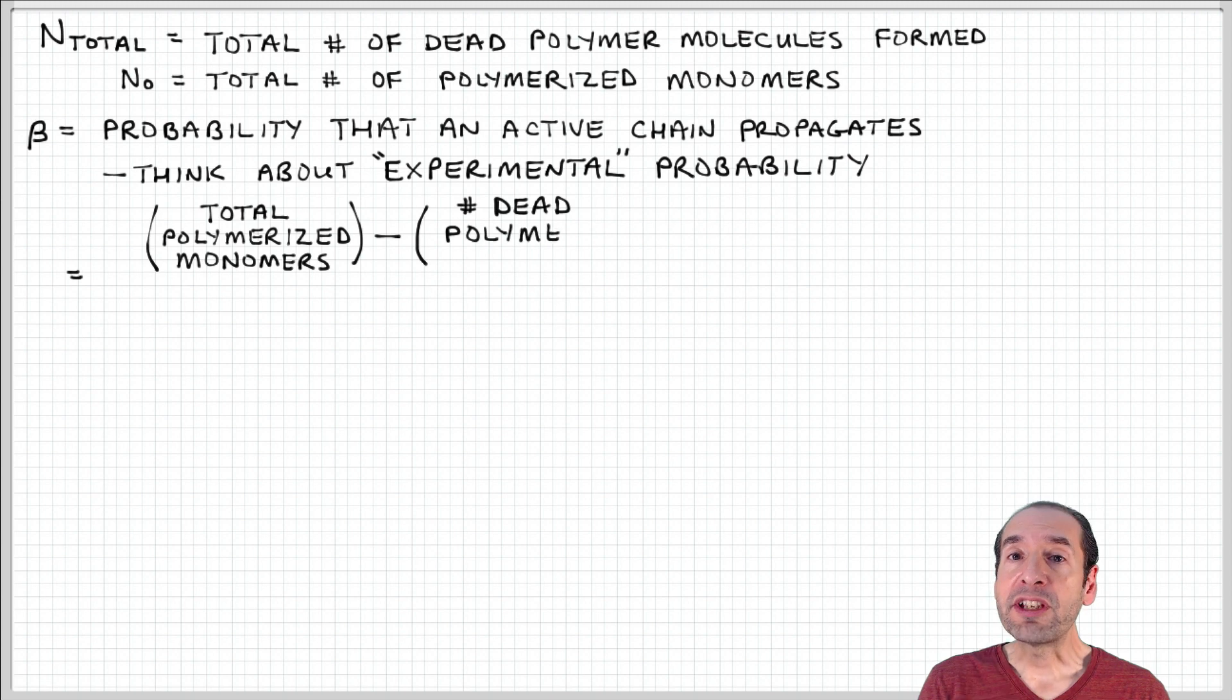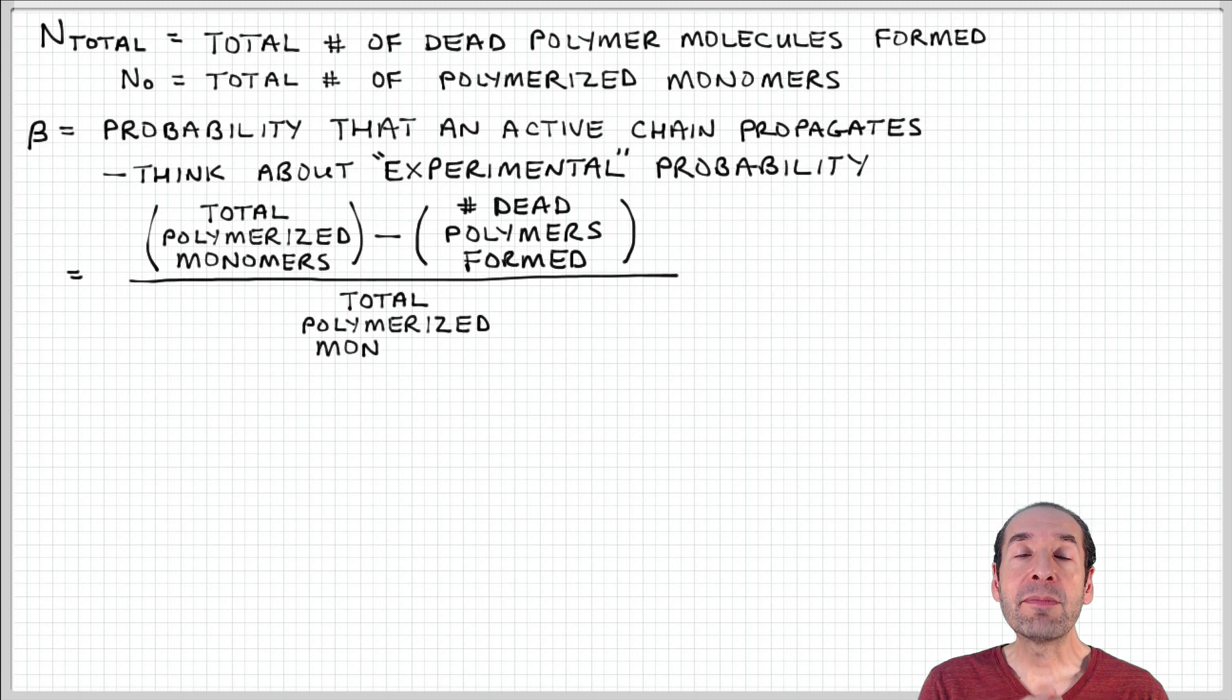In other words, I flip a coin 50 times and I count how many times it comes up heads. I divide that number by the 50 coin flips, and that gives me an experimental probability, as opposed to a theoretical probability, which I get from mathematical analysis of a distribution function or something like that.